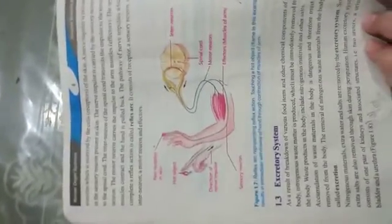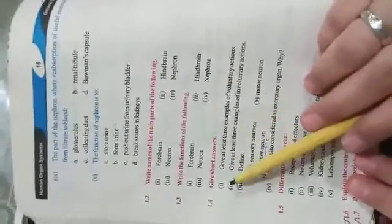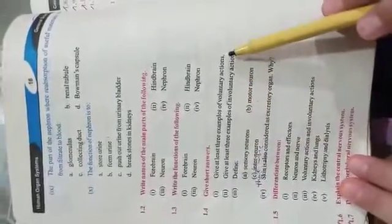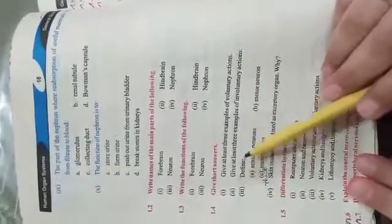Question number 1.4: Give short answers. Number one: give at least three examples of voluntary actions. Number two: give at least three examples of involuntary actions. The answer is on page number seven.